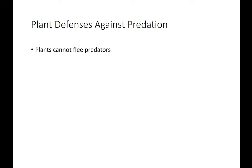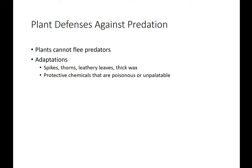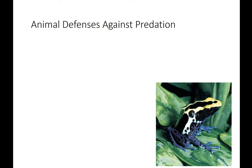Plant defenses: plants obviously can't run away, so speed and agility aren't going to be in their defense category. What they've developed instead are spikes, thorns, leathery leaves, thick wax, and sometimes poisons that make them unpalatable.